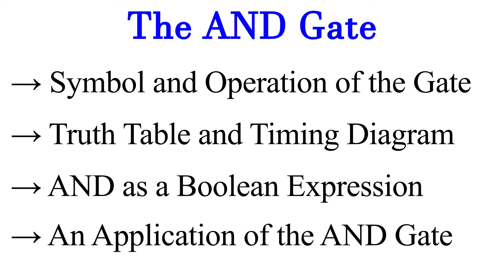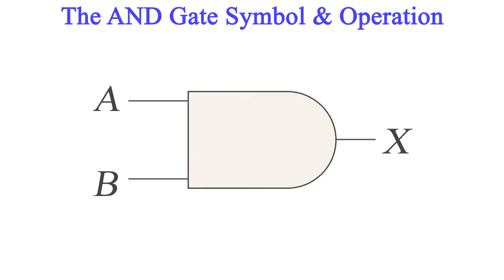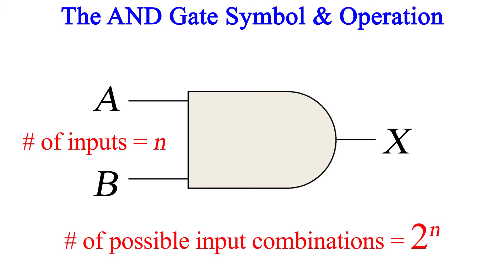So let's start with the symbol and its function. A two-input AND gate is shown here, but this gate can have any number of inputs greater than one. The number of possible input combinations depends on the number of inputs. If we let the number of inputs be the variable n, then the total number of possible input combinations is 2 to the n power. So our two-input gate here has four possible input combinations, because 2 to the second power is 4.